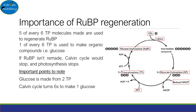A point to note is that two triose phosphate molecules are needed to make glucose, so the Calvin cycle needs to turn six times to make one molecule of glucose. Essentially, photosynthesis is one of nature's most inefficient processes — it's amusing how the most important and most common process is done in the worst way possible.